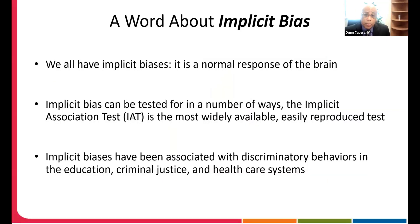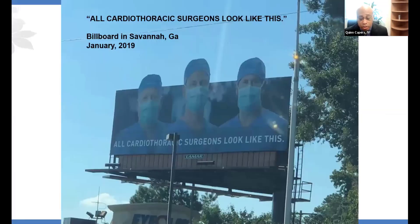We all have implicit biases. It's simply how the brain responds. You're likely aware there is a computer-based test to uncover your unconscious associations — the most common one is the Implicit Association Test. The results on those implicit association tests have been associated with discriminatory behaviors in the education system, the criminal justice system, and the healthcare system. We take in images all around us, and our unconscious brain, looking for patterns to help us navigate the world, will certainly start making associations.